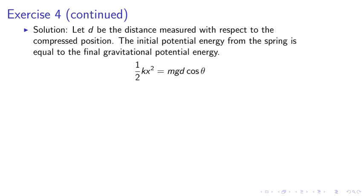Exercise 4 continued. Solution. Let d be the distance measured with respect to the compressed position. The initial potential energy from the spring is equal to the final gravitational potential energy. In other words, we can write half kx squared equals m g d cosine theta. Where we have theta equals to 90 degrees minus 27 degrees, and the spring constant is 20.8 Newton per centimeter.